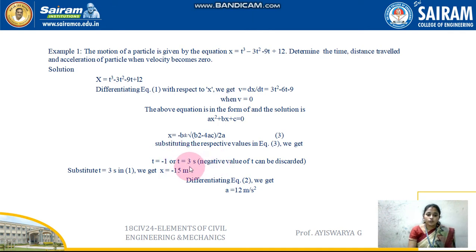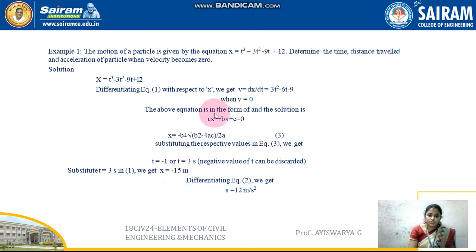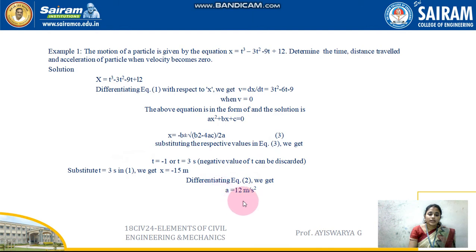Substituting T = 3 seconds into equation 1, we get X = -15 meters. The negative sign is acceptable as it indicates direction. Next, differentiating the velocity equation 3T² - 6T - 9 gives acceleration A = DV/DT = 6T - 6. Substituting T = 3 seconds, we get acceleration A = 12 meter per second square.